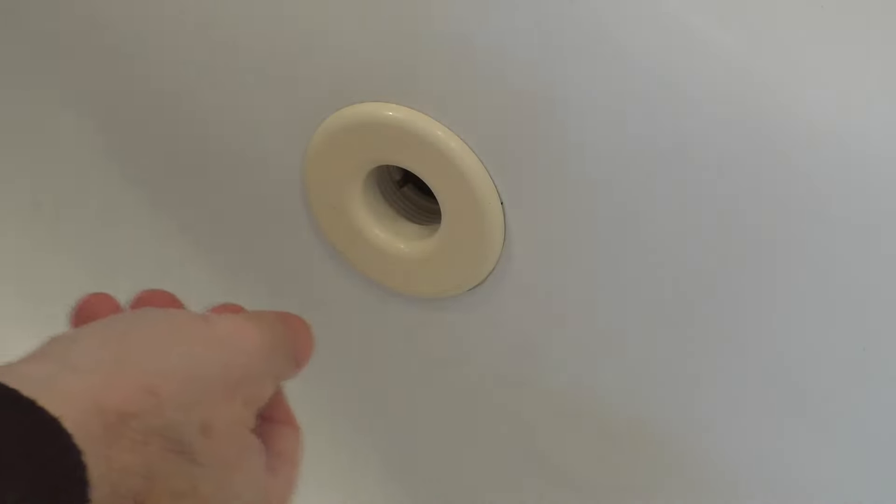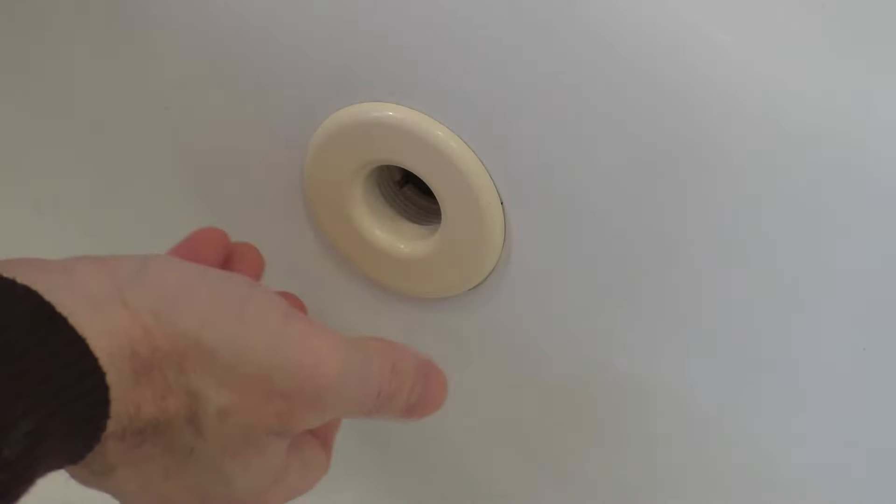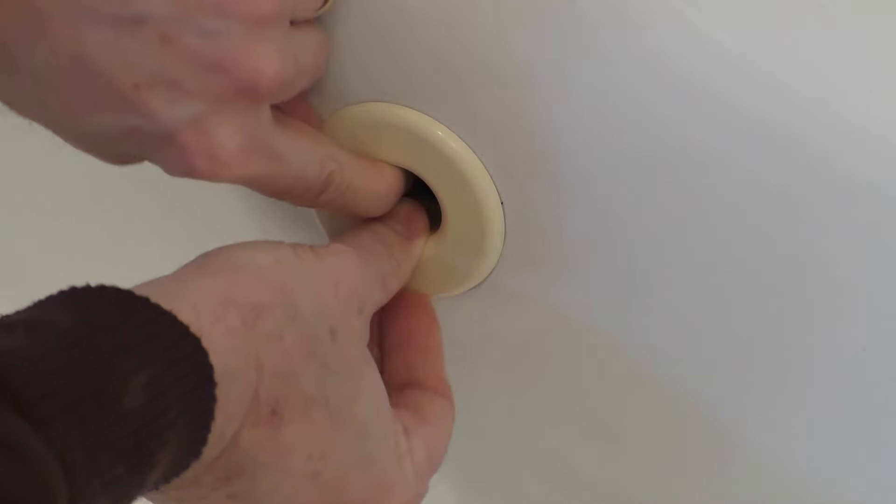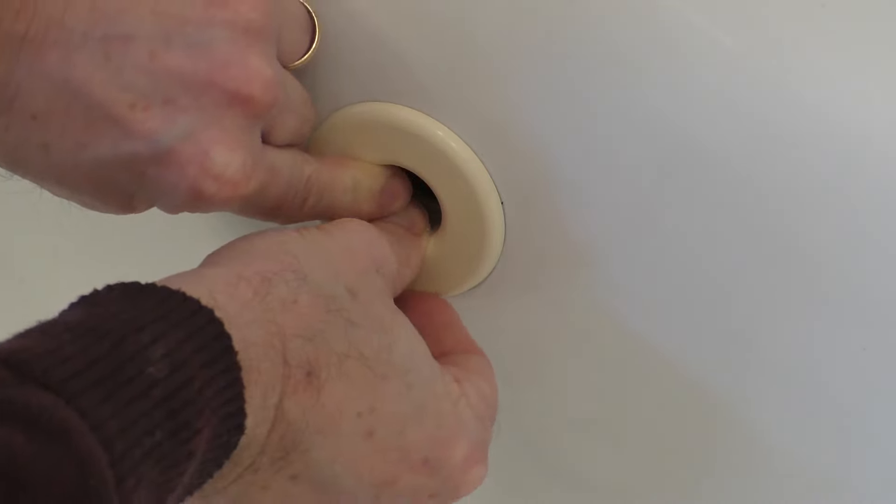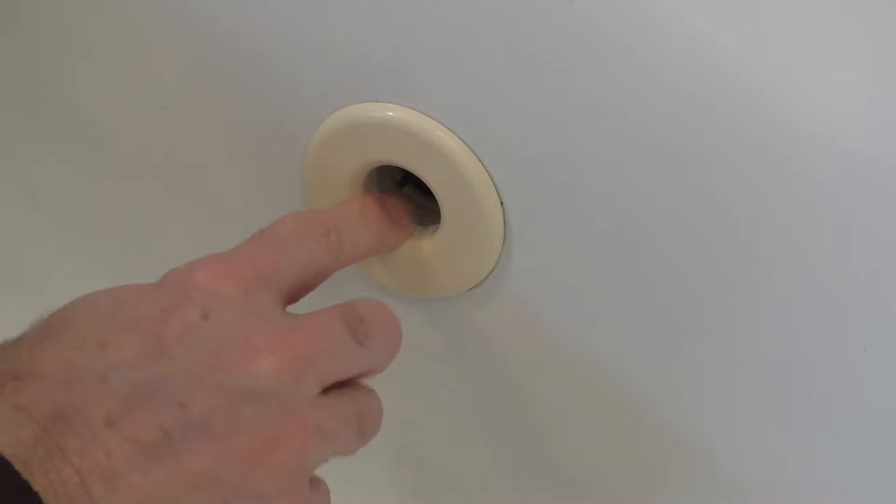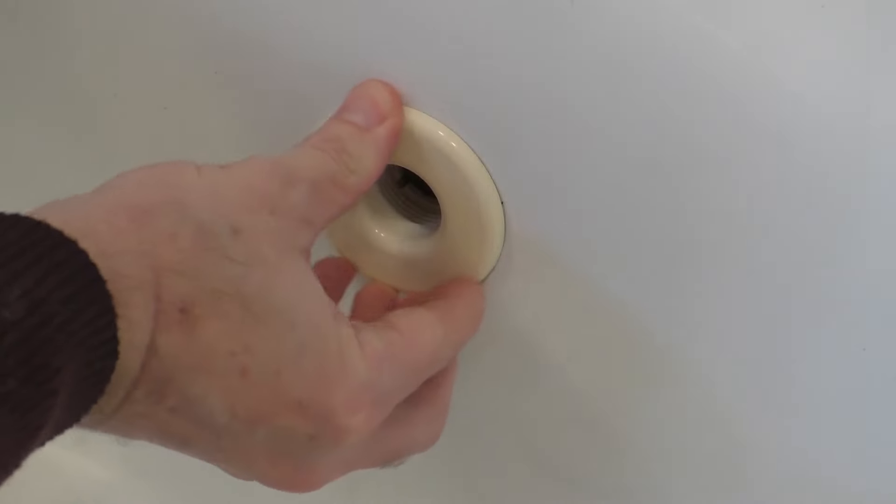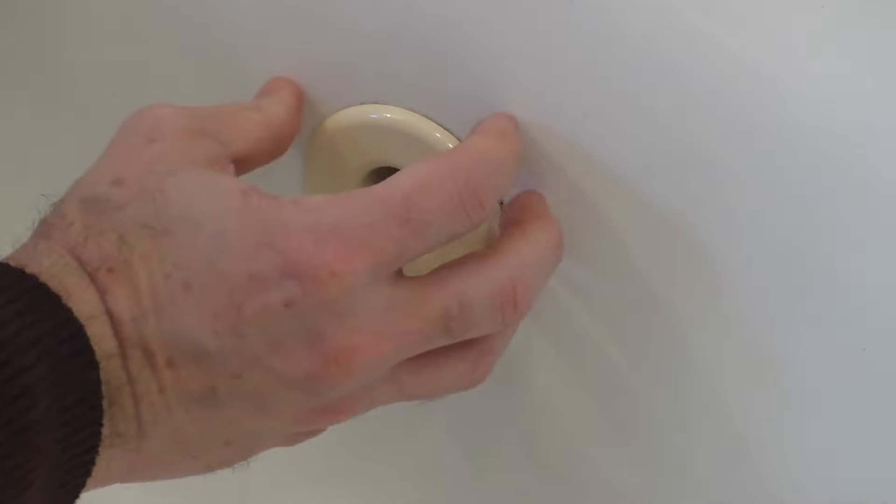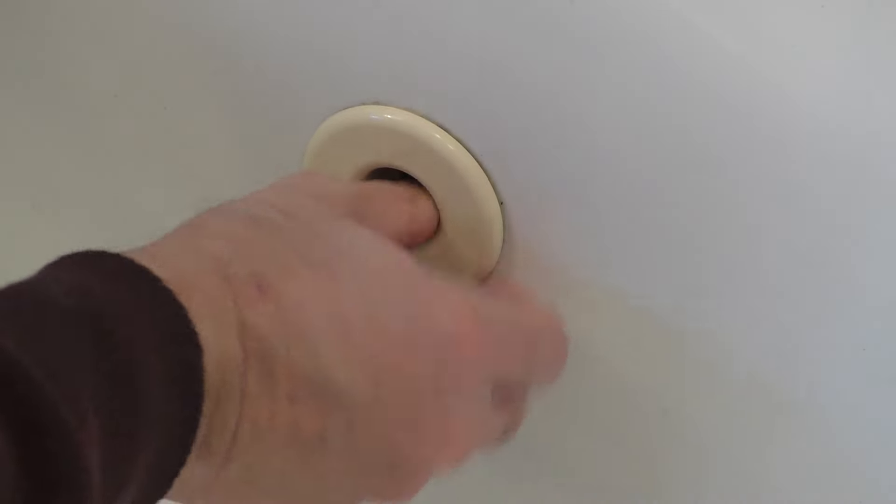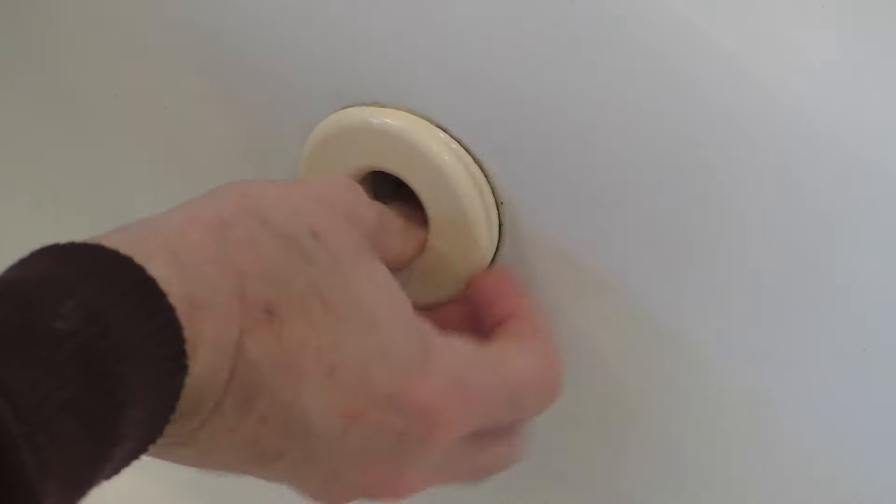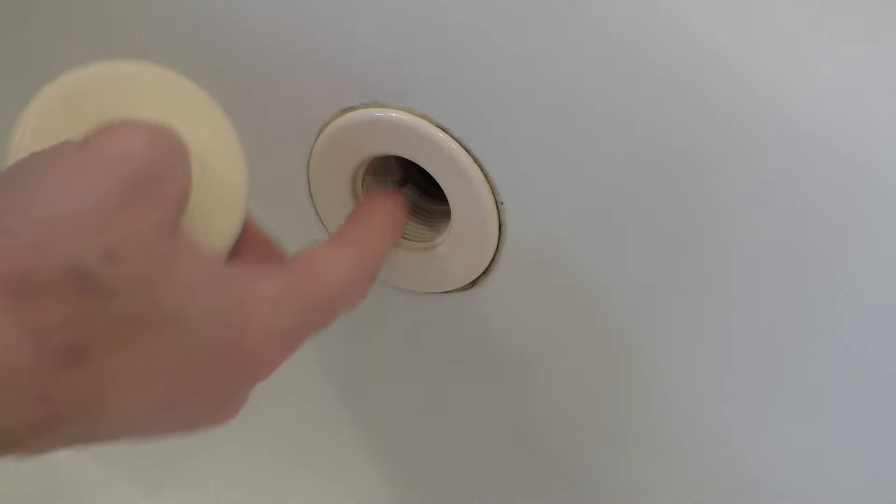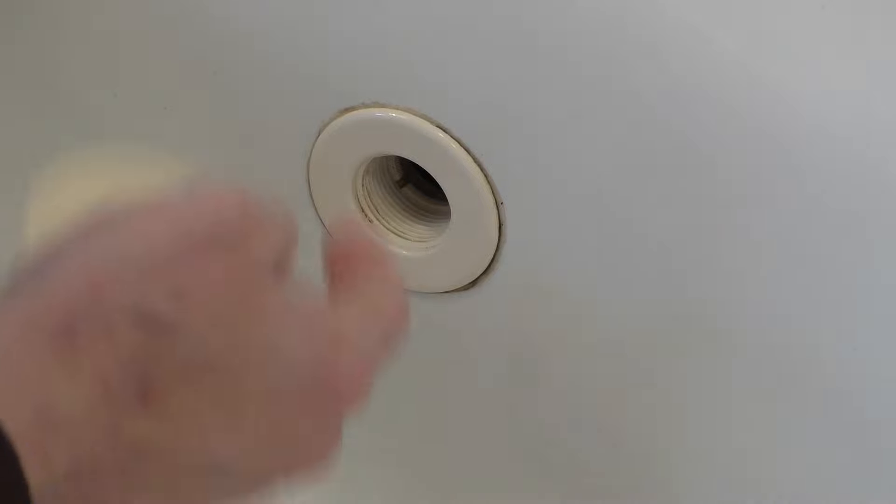Now to remove the shield it may take some strength but I've already removed this once so it's pretty loose. Just rotate this shield counterclockwise, it has some threads and it should come off. It may get stuck in there after years of use but it'll eventually pop off and screw off like that. I'll save this for another time if another shield breaks.